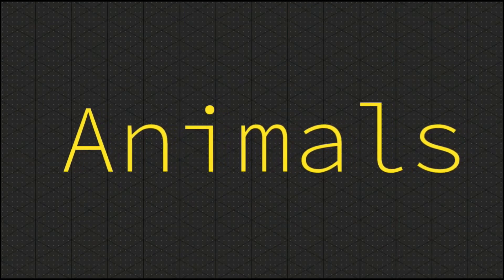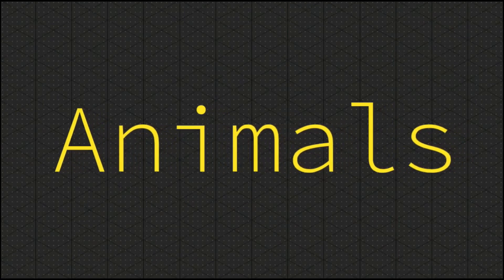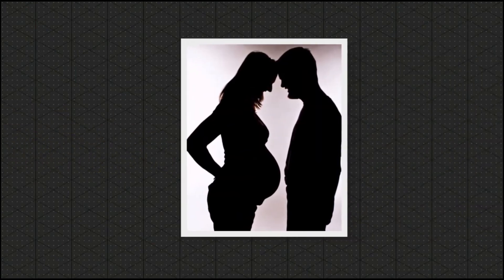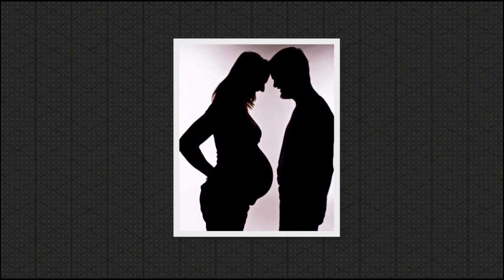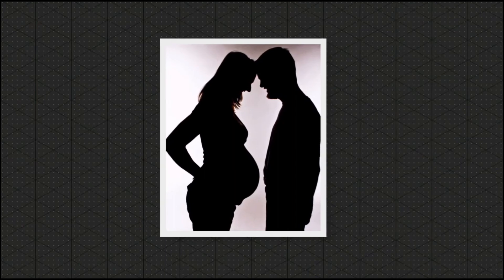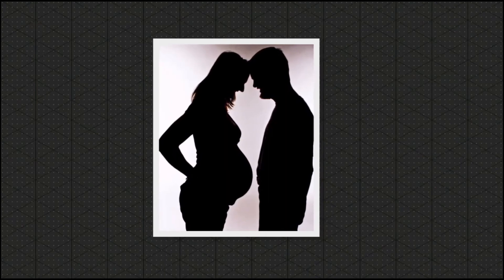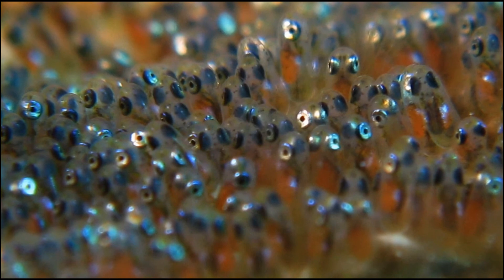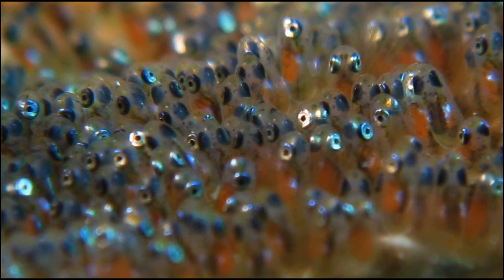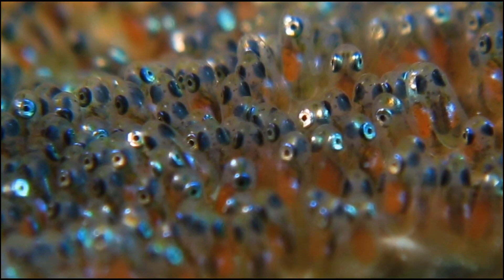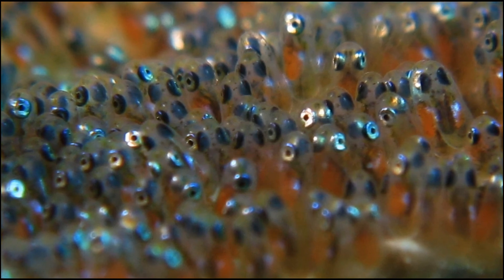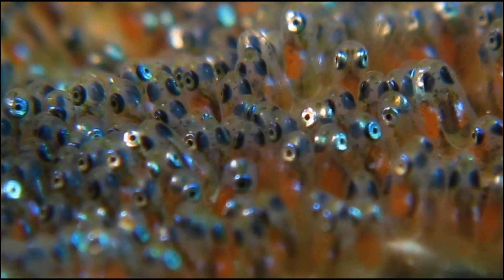Sexual reproduction in animals is slightly different, and they have two different types of fertilization. Many animals have internal fertilization, which allows the egg and sperm to unite in a protected environment. Other organisms, like fish, have external fertilization, which allows the egg and sperm to unite outside of the organism's body. An advantage of external fertilization is that you are able to produce far more offspring at one time.